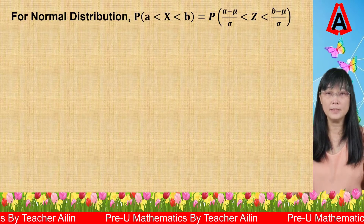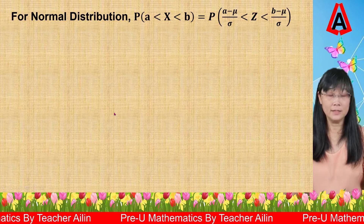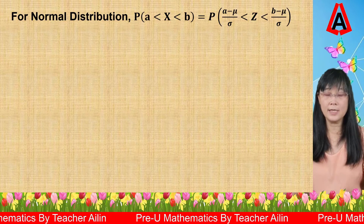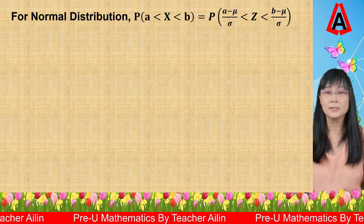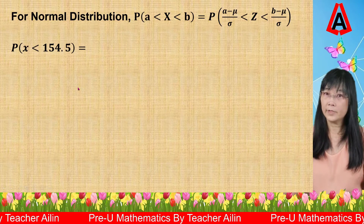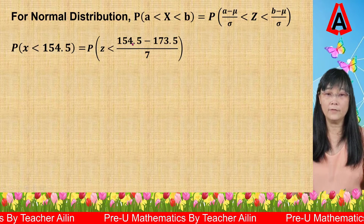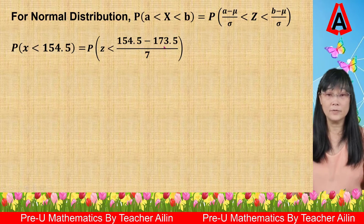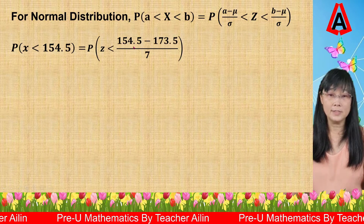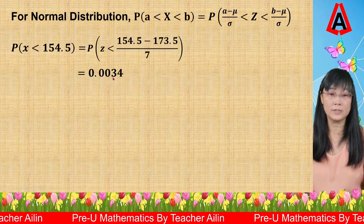Now we are going to calculate the probability of each class. Since we are testing normal distribution, we use the standard normal distribution table. Therefore, the variable x must be changed to the standard normal variable z. For the first class, when x is less than 154.5, we change x into z using (154.5 minus the mean 173.5) divided by the standard deviation 7. Based on the standard normal distribution table, the probability is equal to 0.034.